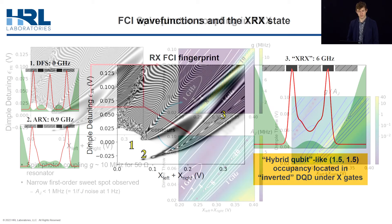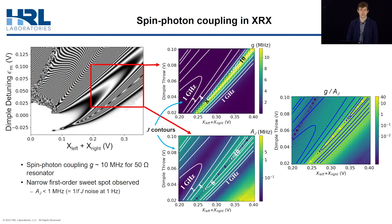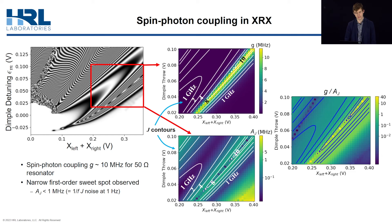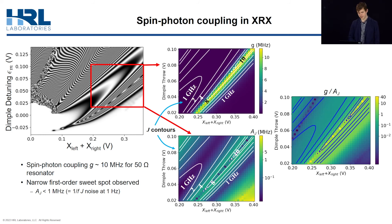In addition to high exchange, XRX supports a fast spin-photon coupling rate G on the order of 10 megahertz, assuming a typical resonator impedance of around 50 ohms. It also possesses substantial resilience against charge noise, as evidenced by a narrow sweet spot here in J-noise amplitude.